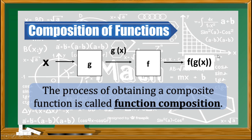Focusing on this symbol, as you can see, the movement is from right going left. So it means to say, you will start with the value of x, x will be placed in g, then afterwards the value will be placed in f. The process of obtaining a composite function is called function composition. And in doing this procedure, a new function is being produced.